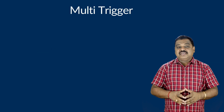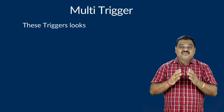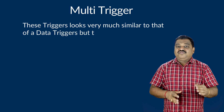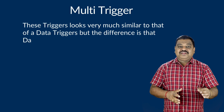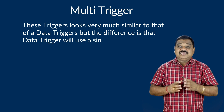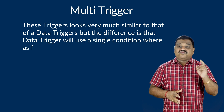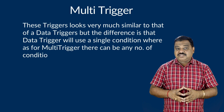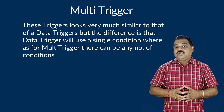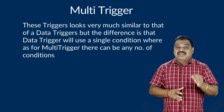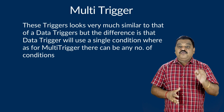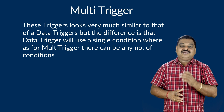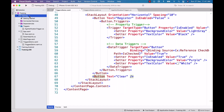Finally, let us understand multi triggers. These triggers look very similar to data triggers, but the difference is that a data trigger uses a single condition, whereas for a multi trigger there can be any number of conditions. One important point to remember: all the conditions must be true before the setters are triggered.